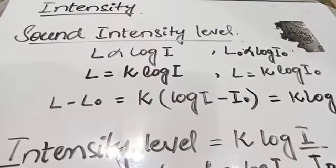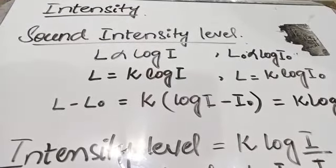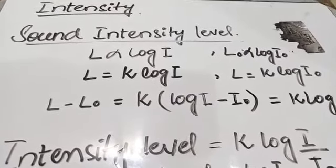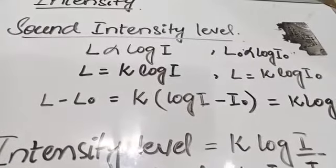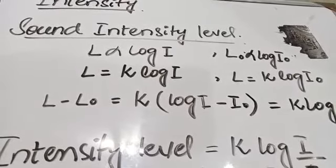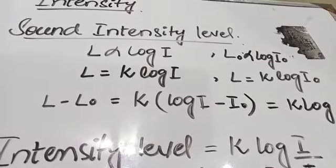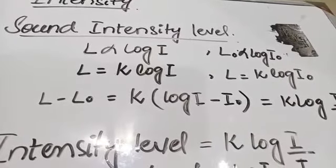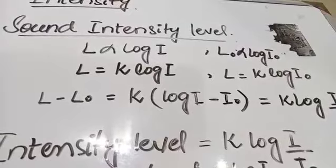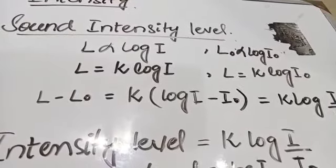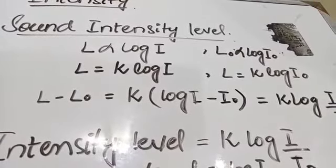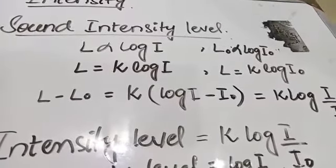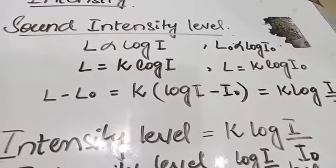The next topic is intensity of sound. We will derive the relation for sound intensity level. The sound wave transfers energy from the sounding body to the listener. The intensity of sound depends upon the amplitude of the sound wave and is defined as the sound energy passing per second through a unit area held perpendicular to the direction of propagation of sound waves. This is called the intensity of sound.